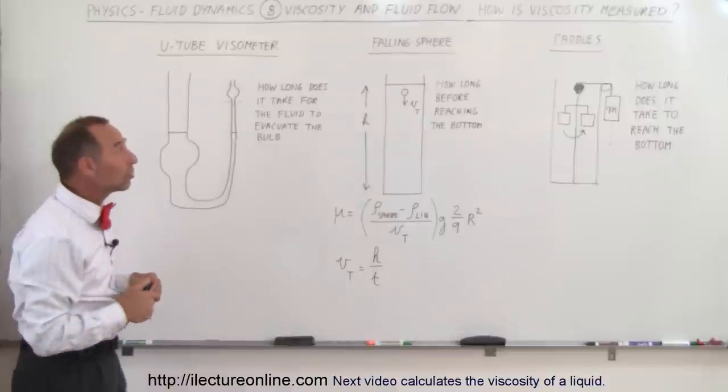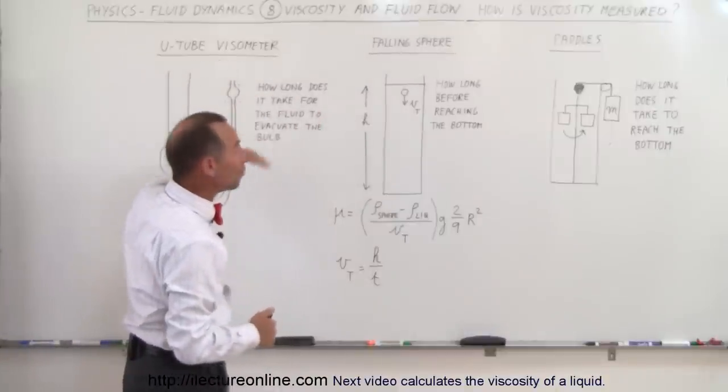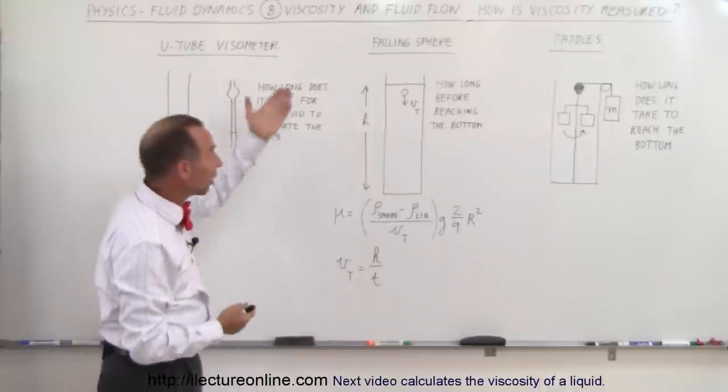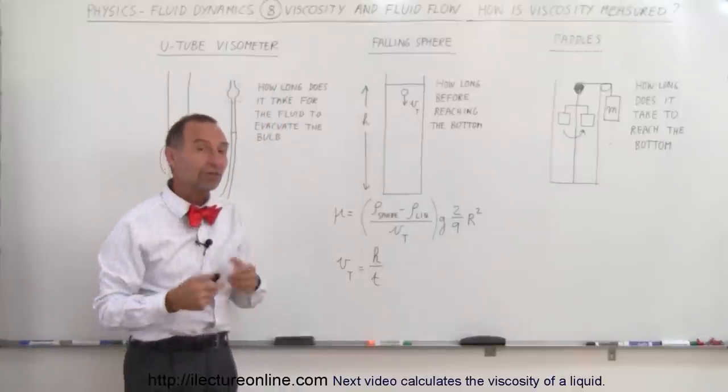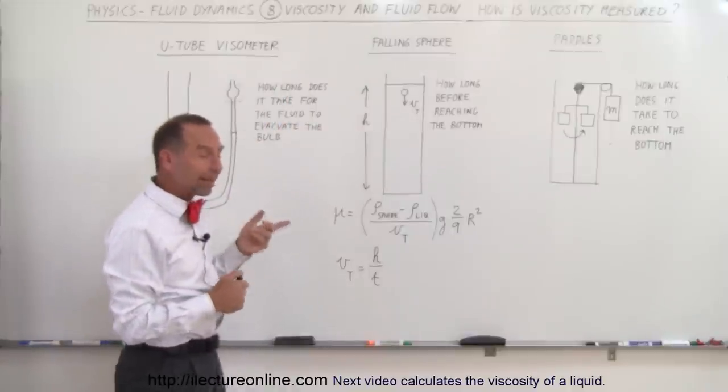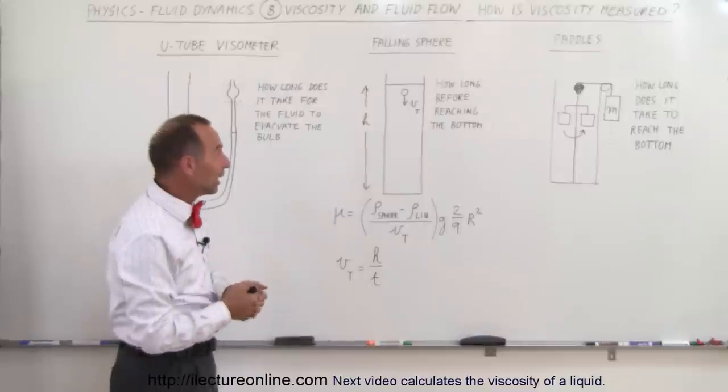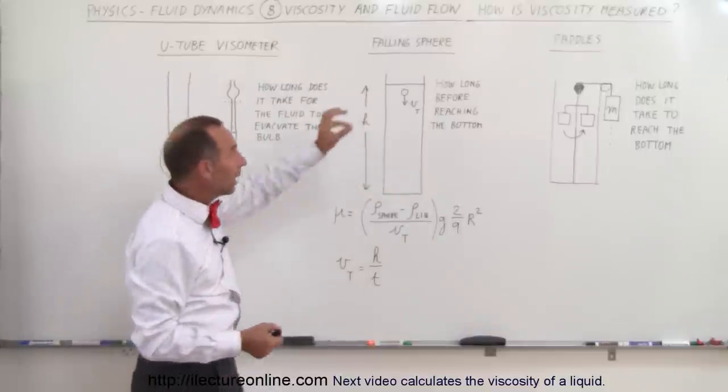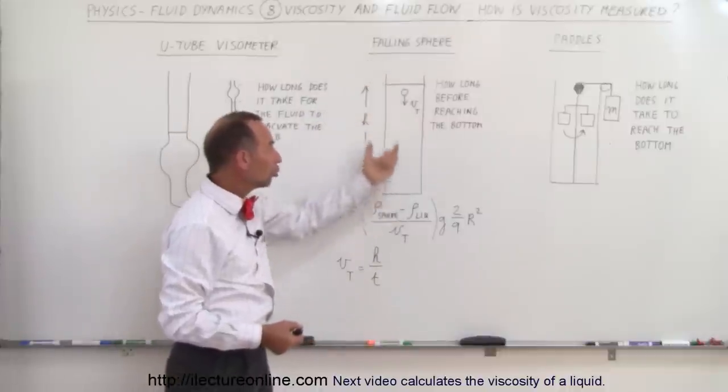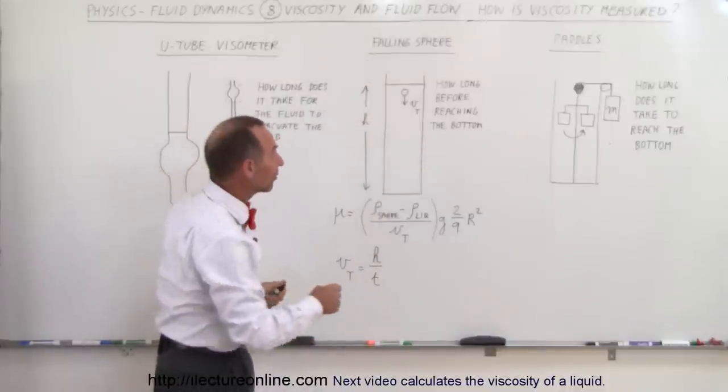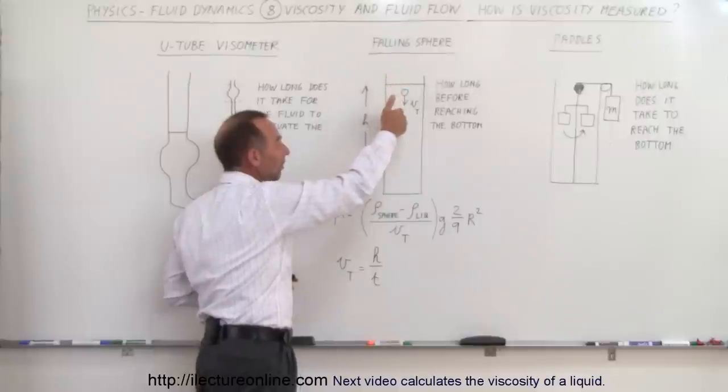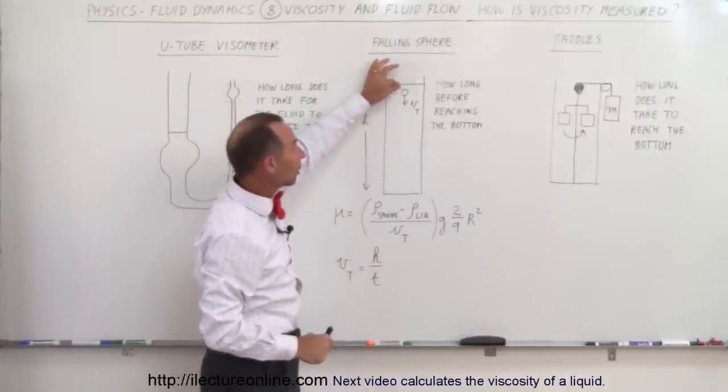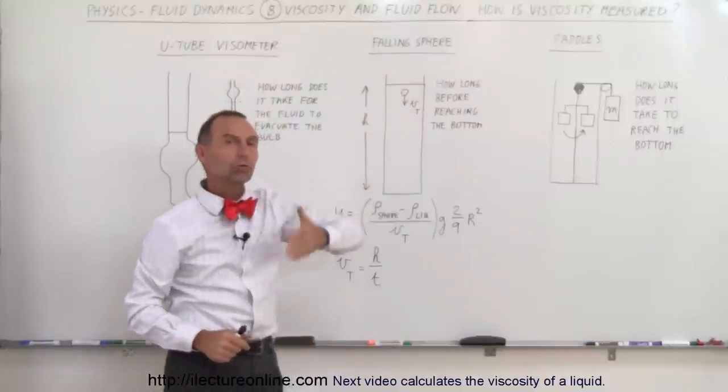Another way in which it's measured is what we call the falling sphere viscometer, or viscosity meter. This is a method that's quite often used in the laboratory and classroom. They take a viscous liquid like glycerin, give you a small steel ball, and you drop it in a long tube that contains that viscous liquid. You simply measure how long it takes for that sphere to reach the bottom. It doesn't take very long after you drop it into the liquid that it reaches what we call terminal velocity.